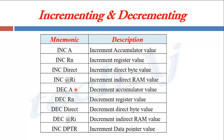DEC A will decrement the value of the accumulator. DEC Rn will decrement the value of a register. DEC direct will decrement the value present at a direct memory address. DEC @Ri will decrement the value pointed by the indirect register pointer. And INC DPTR — the increment instruction can also be used for DPTR to increment its value, but DEC cannot be used with DPTR.